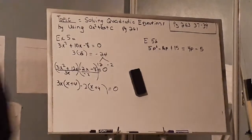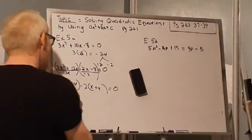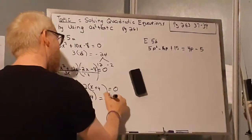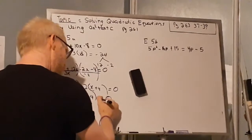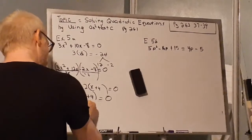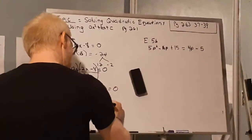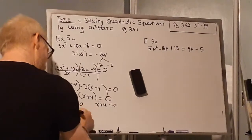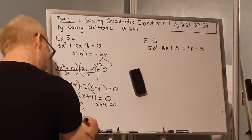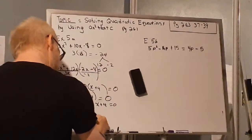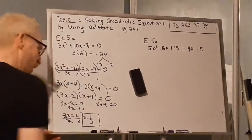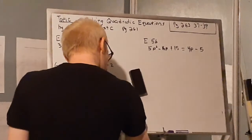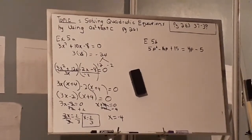So I have (3x - 2) times (x + 4) equals 0. Now I solve each equation individually: 3x - 2 = 0 and x + 4 = 0. For 3x - 2 = 0, I add 2 on both sides to get 3x = 2, then divide by 3, giving x = 2/3. On the other side, x + 4 = 0, so I subtract 4 and get x = -4.